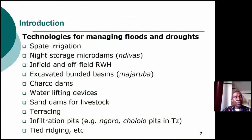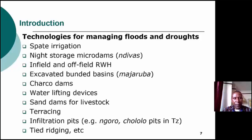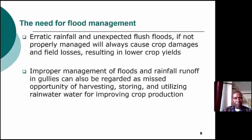In Tanzania, we have technologies that can be used to harvest water and take advantage of floods for crop growth. We have spate irrigation, night storage microdams, in-field rainwater harvesting, off-field systems, and many others like expanded banded basins, water lifting devices, and terracing. Of course, there are many technologies across different countries worldwide. Of these technologies, we'll focus more on spate irrigation.